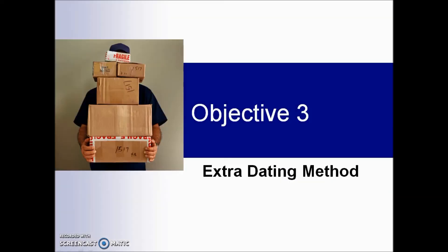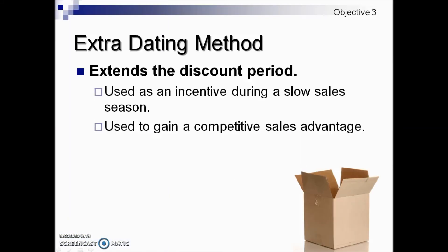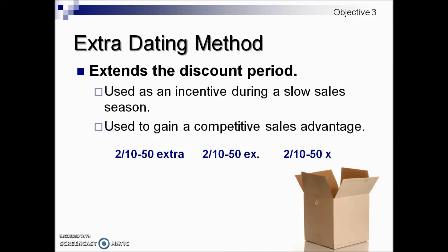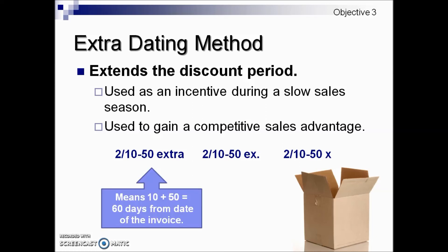One other type of cash discount we will look at is called the extra dating method. This extends the discount period and is used as an incentive during a slow sales season or to gain a competitive sales advantage. An example might be a seller offering Christmas merchandise with extra dating to allow the buyer to take the cash discount after the holiday selling period. The extra dating method could look like any one of these three forms. Even though there is a minus between the numbers — such as 10 and 50 — it means you take 10 days plus an extra 50 days, in other words 60 days total to be eligible for that discount.